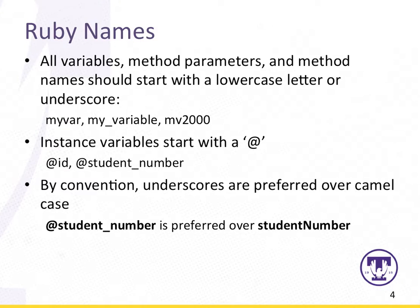As far as Ruby names are concerned, variables, methods, method parameters, and method names all basically start with lowercase letters or underscore. So variables like myvar, myvariable, or mv2000 — those are the types of variables you would expect to see in Ruby. The convention is to use underscores over camel case, so if you're writing something like student number, the convention in Ruby would be to use the underscore rather than camel case.